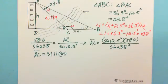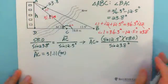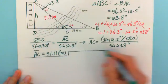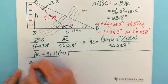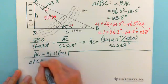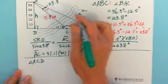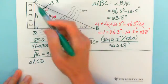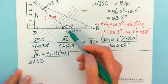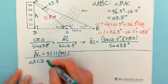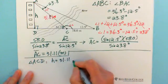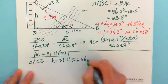Once you find this length, we can work with the other triangle — the second step. In triangle ACD, since this is a right triangle, 36.3 degrees is opposite H, and AC is the hypotenuse. So we can write H equals 31.11 multiplied by sine 36.3 degrees.